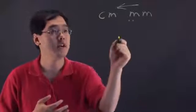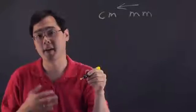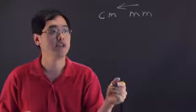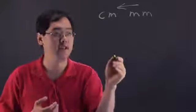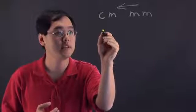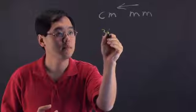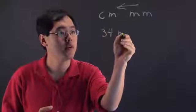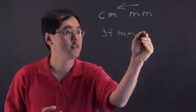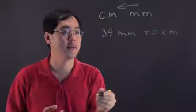When it comes to millimeters to centimeters, you're talking about dividing by 10. Here's an example on how to do that. Suppose you want to convert 34 millimeters and you want to convert that to centimeters.